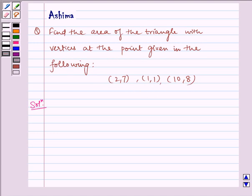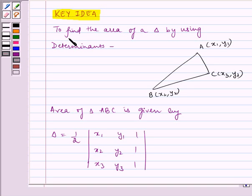Now before writing the solution, let us look at the key idea. To find the area of a triangle by using determinants, consider triangle ABC with vertices (x1,y1), (x2,y2), and (x3,y3). Then the area of triangle ABC is given by Δ = 1/2 |x1 y1 1; x2 y2 1; x3 y3 1|.